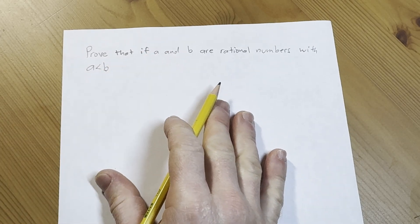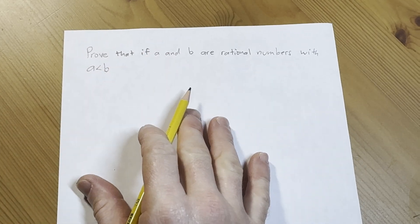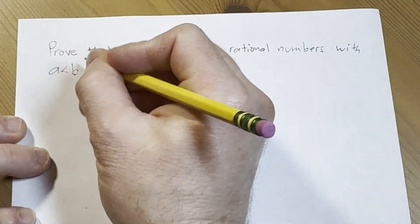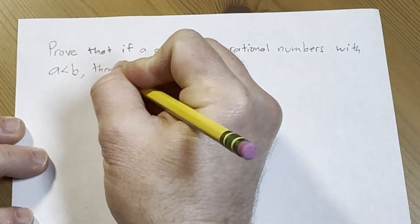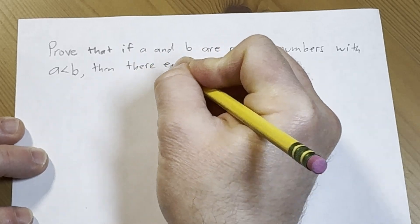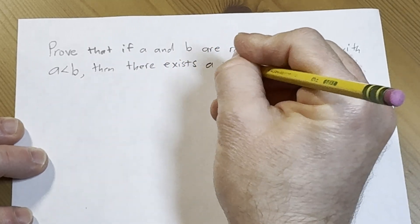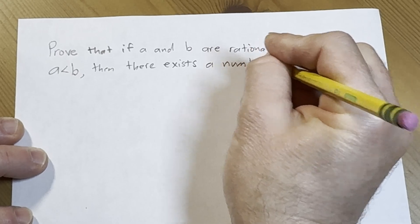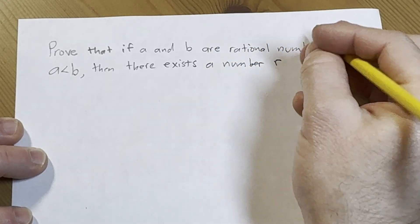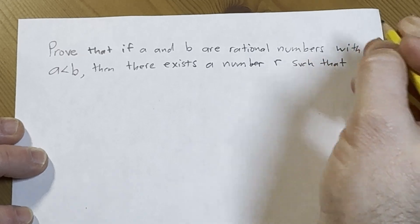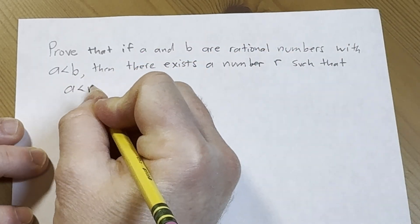...then there exists a number r, lowercase r, such that a is less than r is less than b. So there's a number r between a and b.